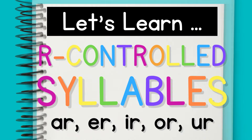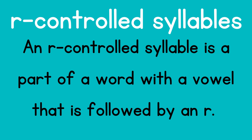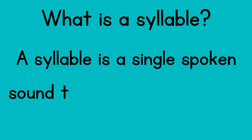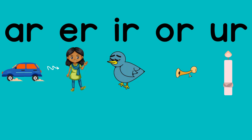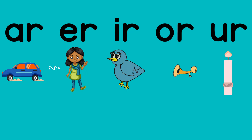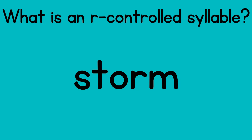Let's learn our R-controlled syllables. An R-controlled syllable is a part of a word with a vowel that is followed by an R. Remember, a syllable is a single spoken sound that usually contains a vowel and some consonants. The five vowel-R combinations are: A-R (car), E-R (her), I-R (bird), O-R (horn), and U-R (burn).